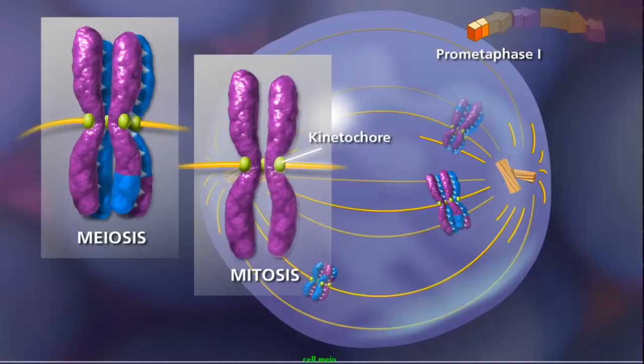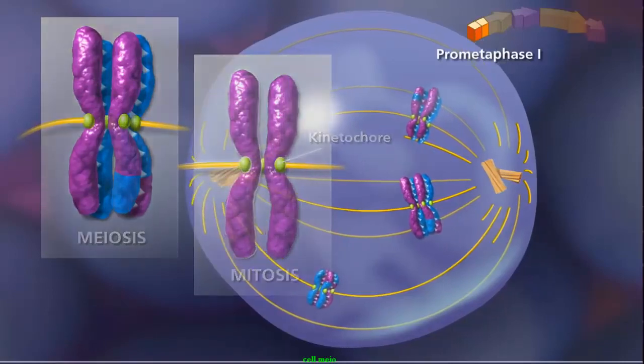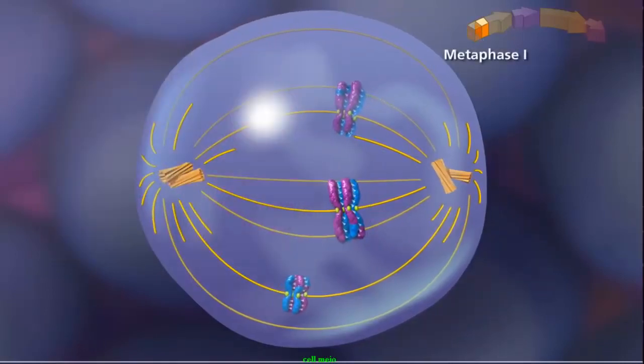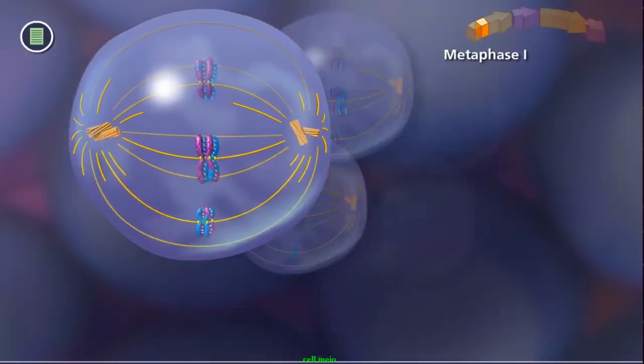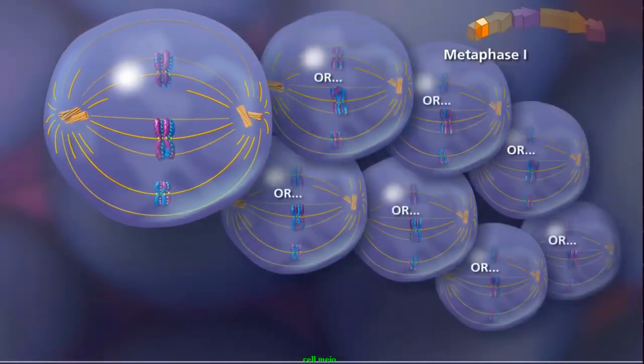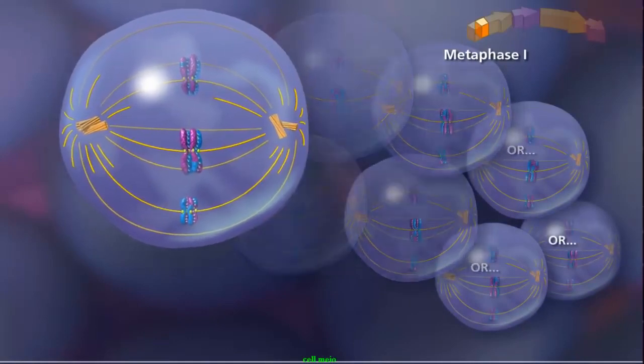In mitosis, each sister chromatid is attached to a spindle fiber. The fibers originate from opposite poles. During metaphase I, bivalents randomly align along the metaphase plate. Due to independent assortment, this alignment is random and adds to genetic diversity.